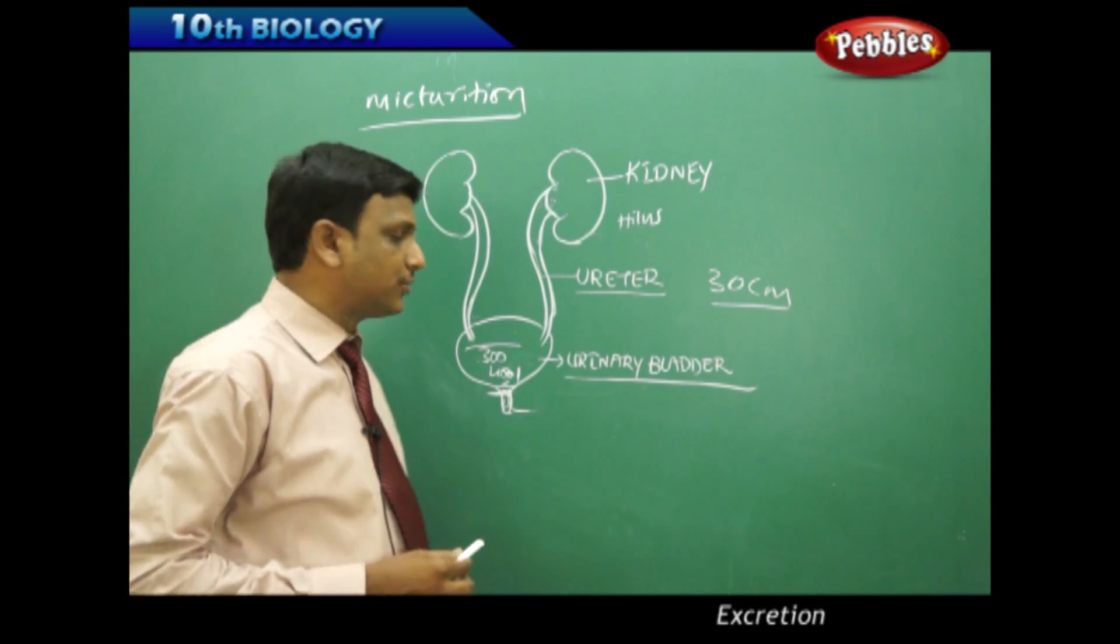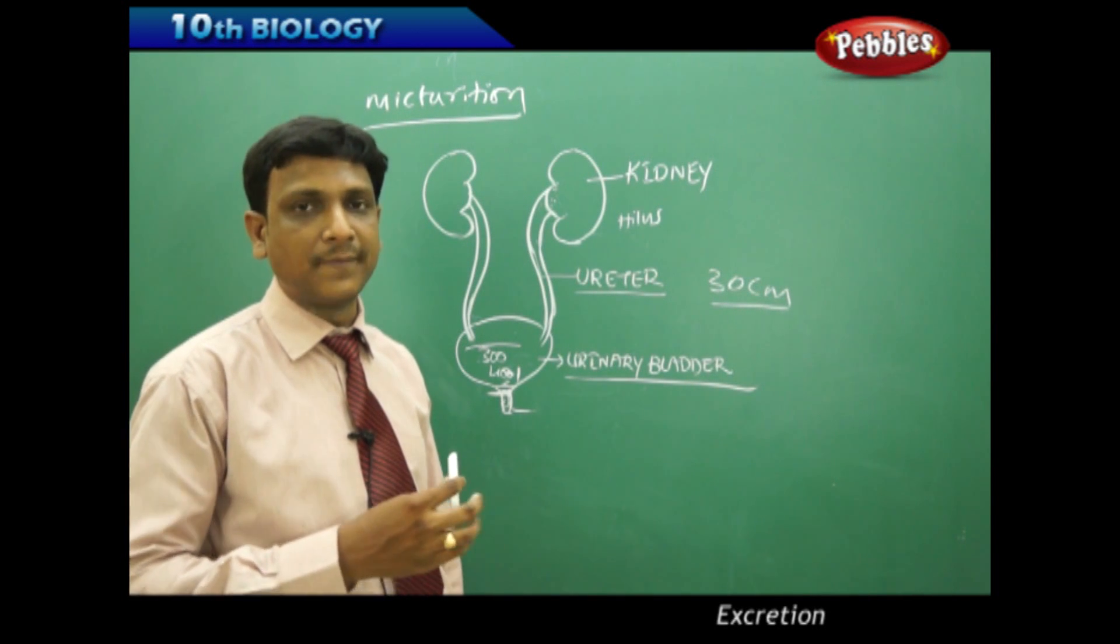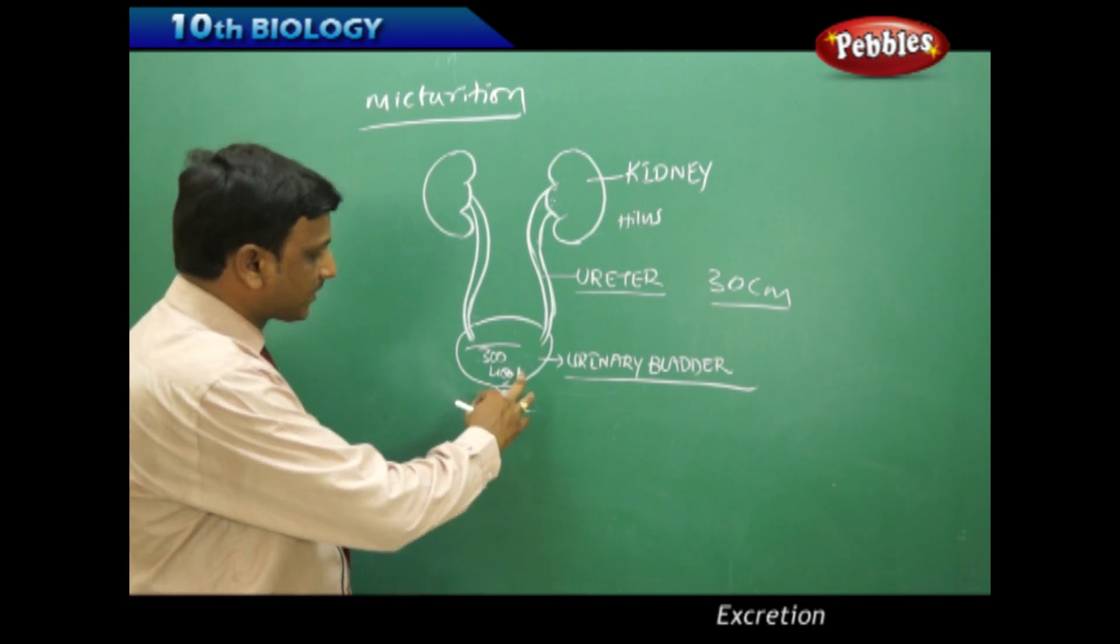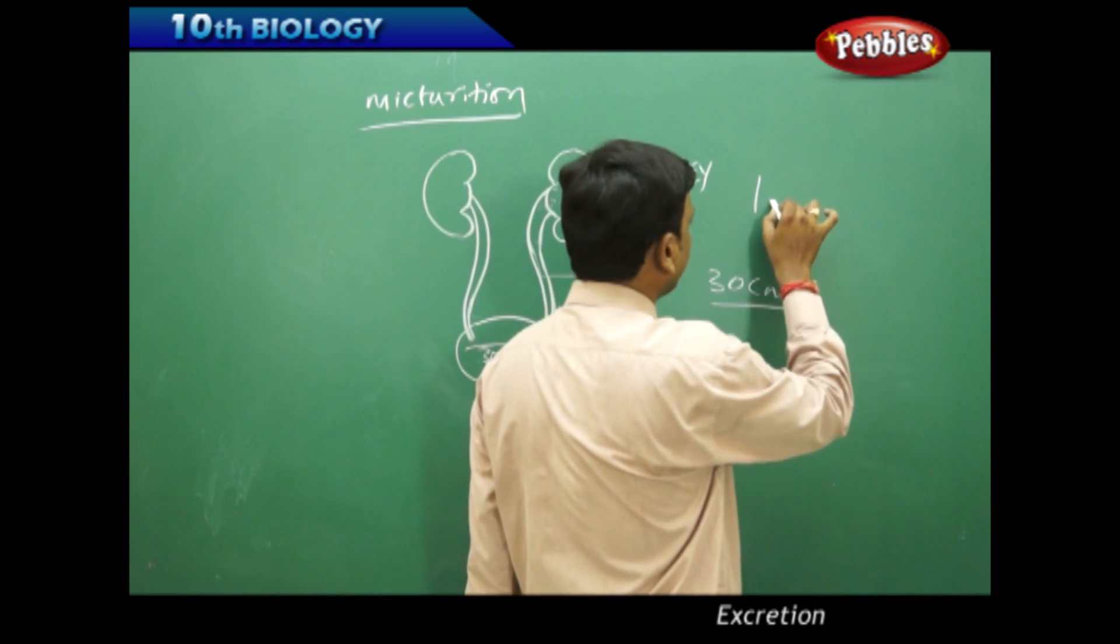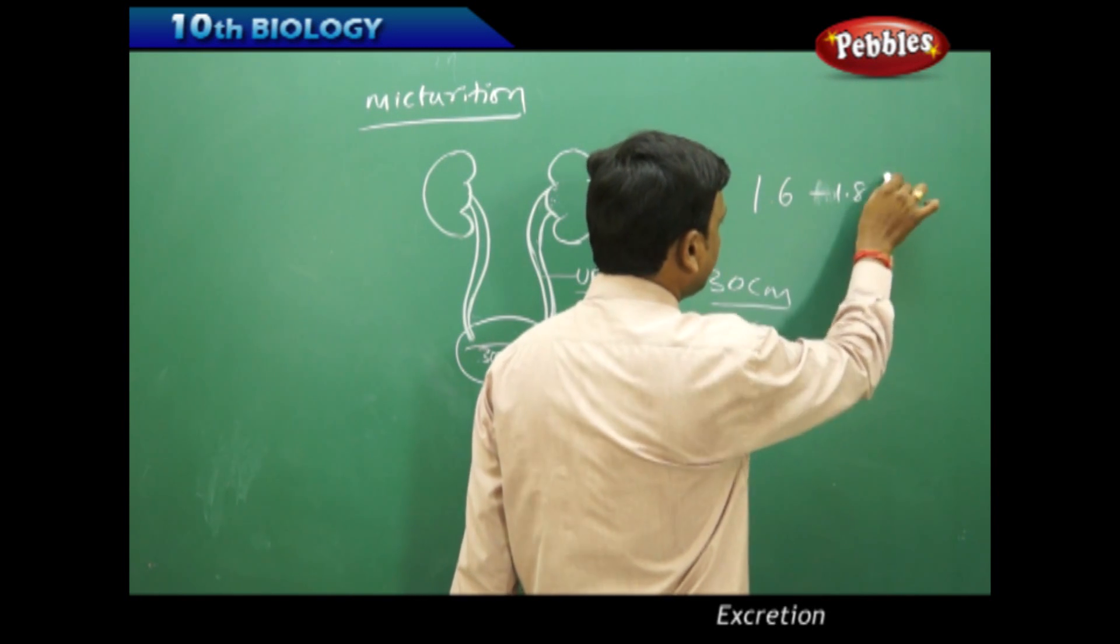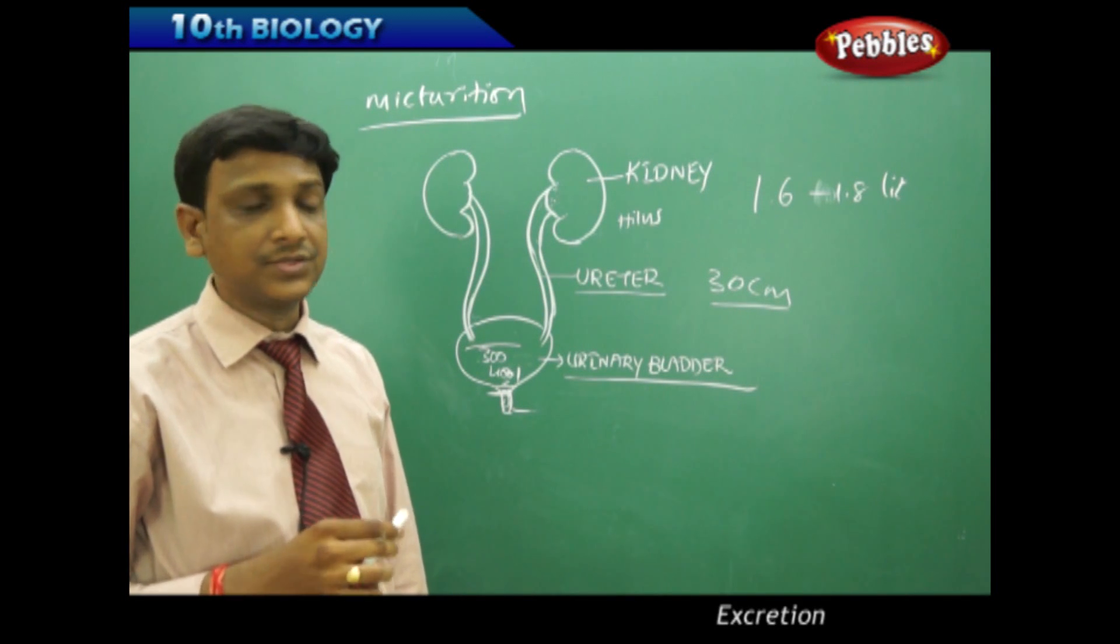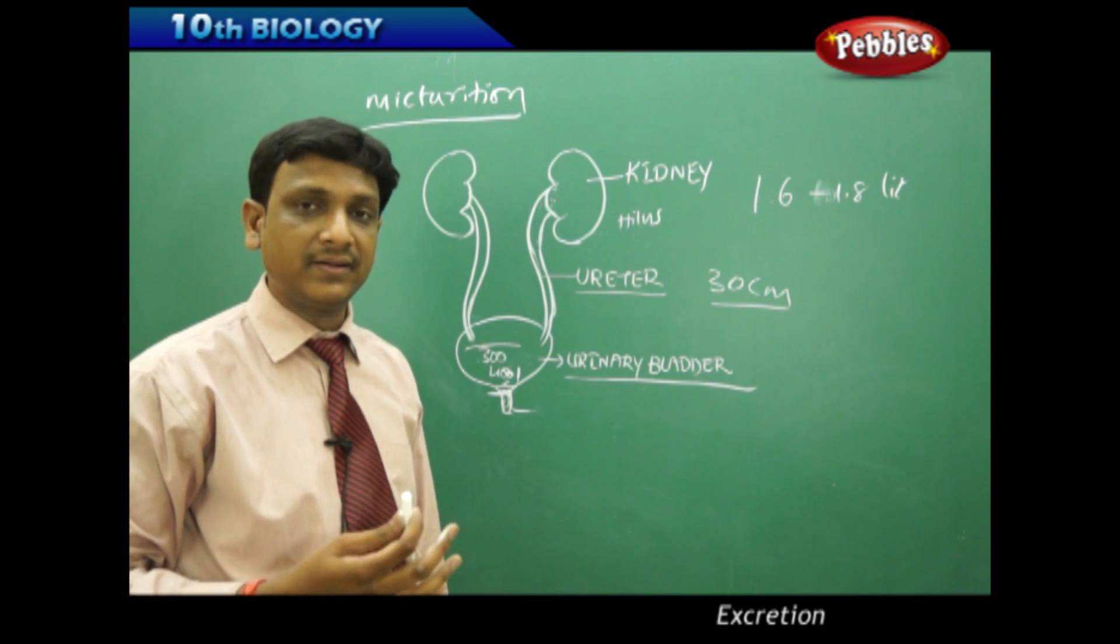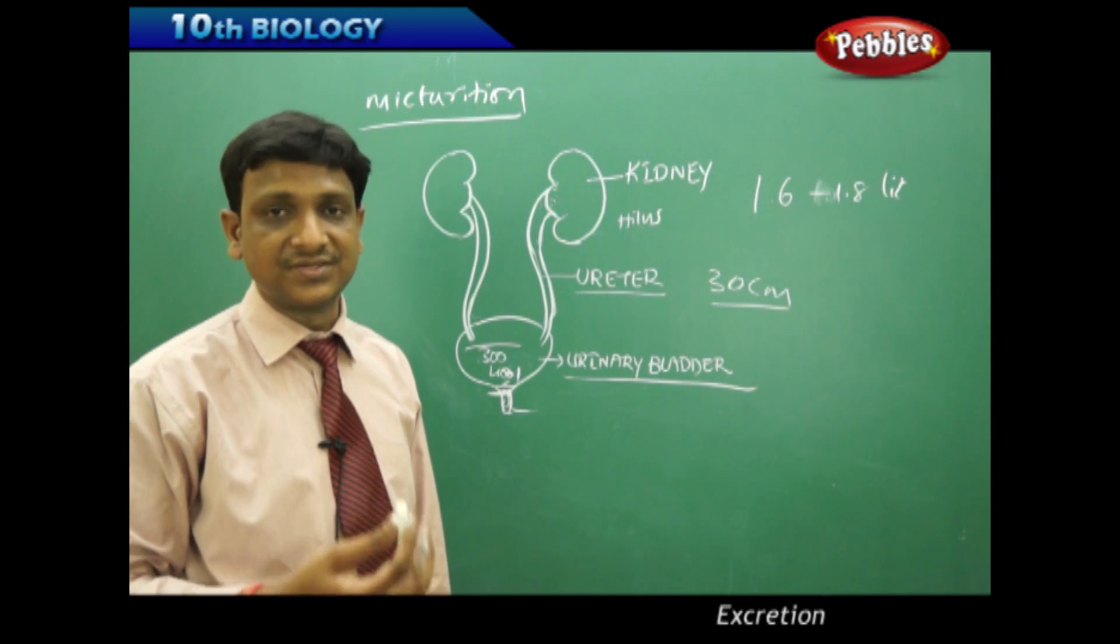The total capacity of the urinary bladder is 600 to 800 ml. When these sphincter muscles are relaxed, the urine is passed out. In a day, a person can excrete around 1.6 to 1.8 liters of urine per day. This is an estimated amount of urine produced and excreted. But the quantity may be increased when large amounts of fluids or fruit juices are taken.